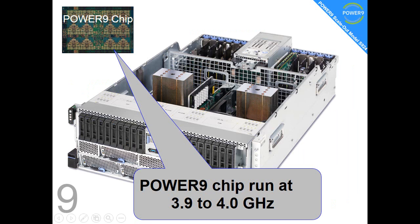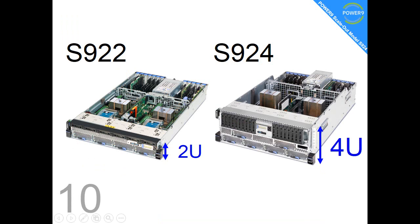Fact number nine: how fast can we push these chips? We're running them at 3.9 to 4 gigahertz. Our nearest competitor tends to run their server-based chips at about 2.5 gigahertz. This shows how IBM's superior engineering gives us that performance advantage.